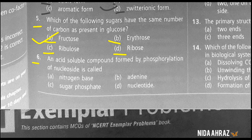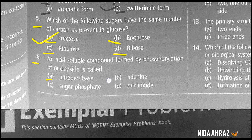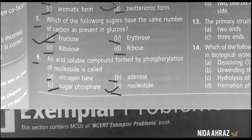An acid-soluble compound formed by phosphorylation of a nucleoside is called: nitrogen base, adenine, sugar phosphate, or nucleotide. The correct choice is option D — nucleotide.